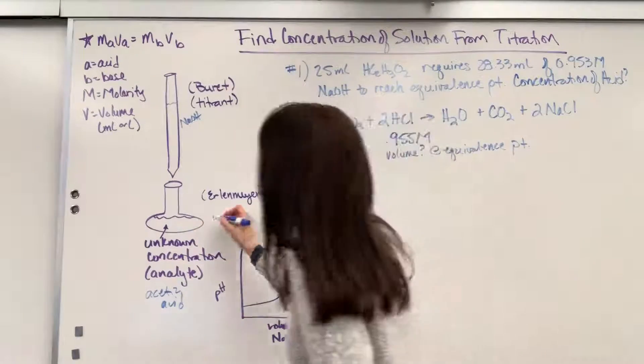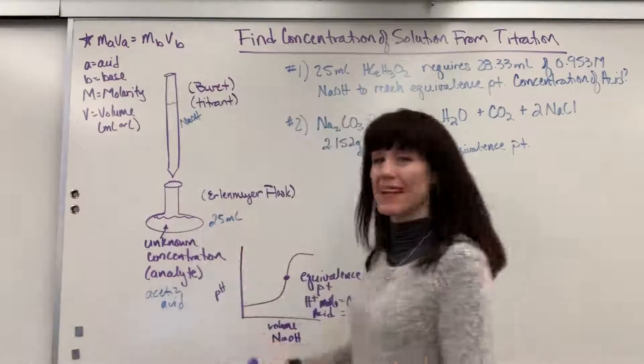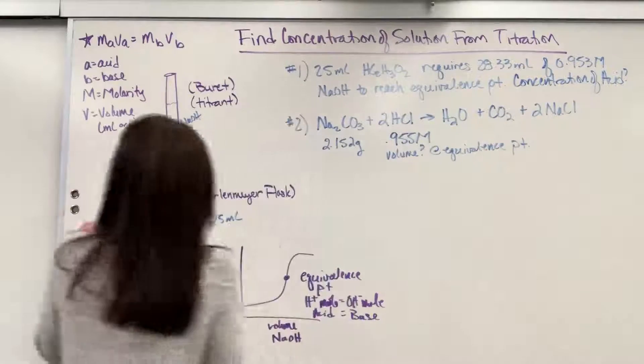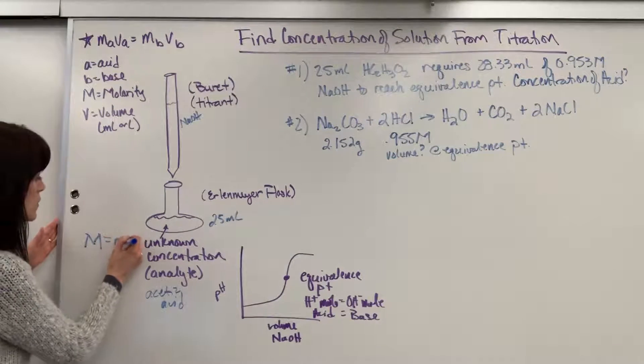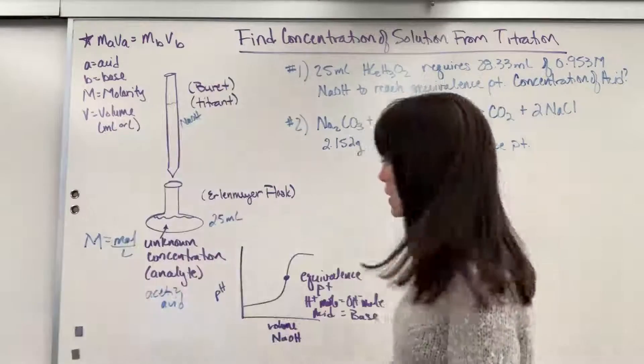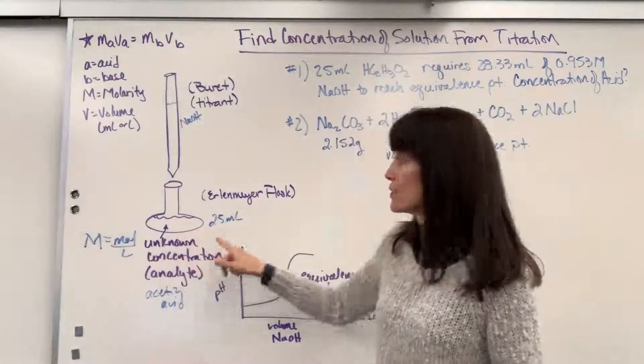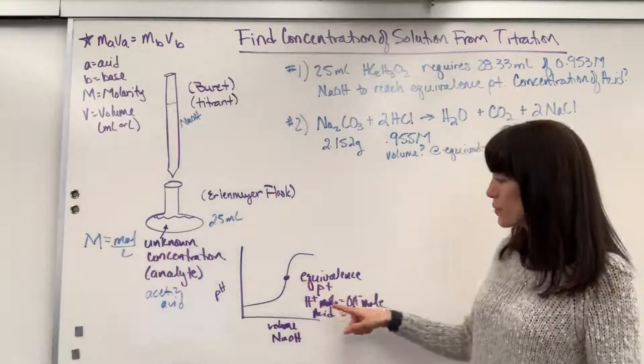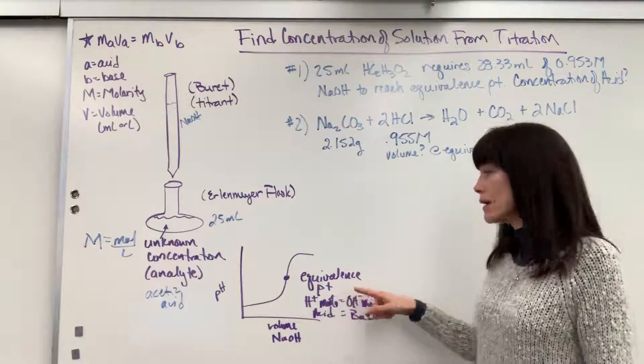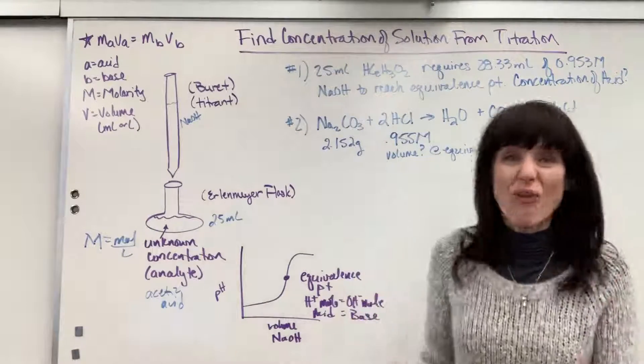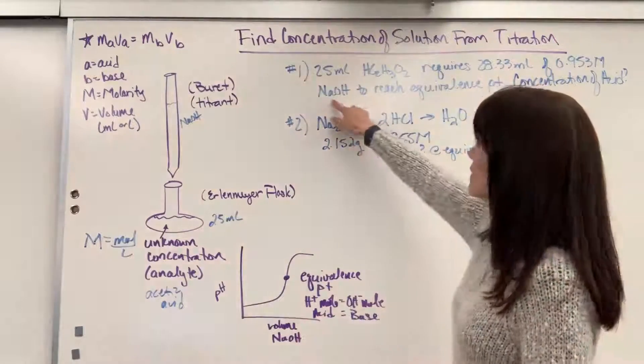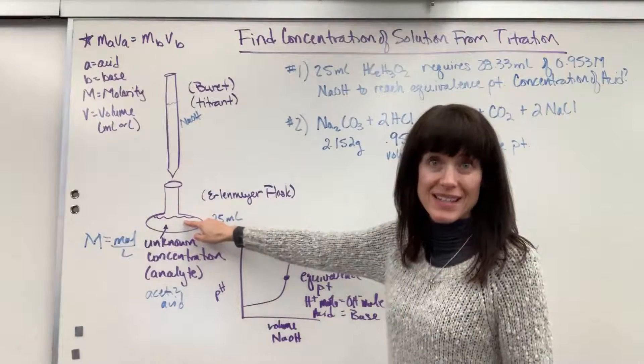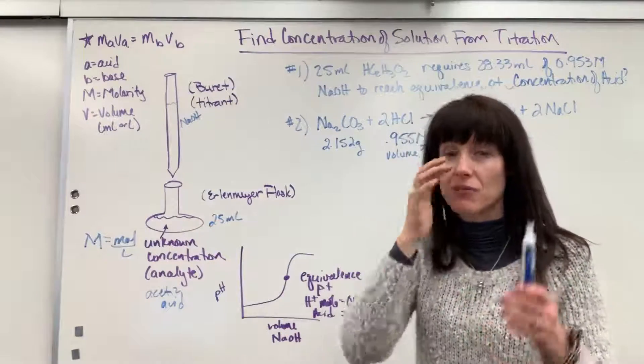Now I know how much I have of this. We have 25 mils of this, and I want to know the concentration. Well, thinking again about the units on concentration, remember molarity equals moles per liter. Molarity is moles per liter. Well, I've got the liters - 25 mils. I just need the moles. What do we know about moles? I know at the equivalence point the moles of that acid equals moles of the base. So all we have to do is find the moles of this base, and that is going to be the moles inside of here, inside of that acid.